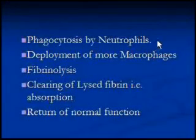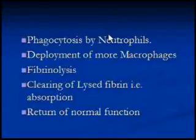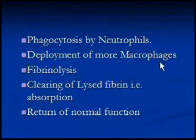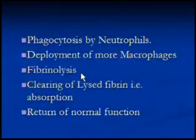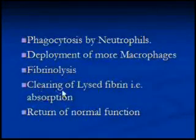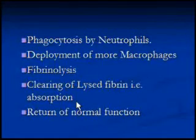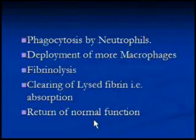Phagocytosis by neutrophils continues, and if neutrophils manage to finish the bacterial population, then more macrophages are deployed. Towards the end of the process, fibrin lysis begins — meaning fibrin starts to break down to be absorbed by the interstitial tissue. Finally, the lung resumes normal function.